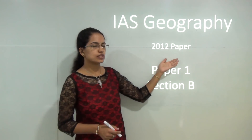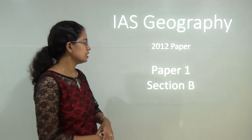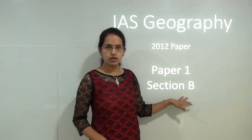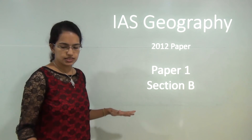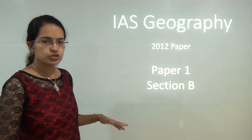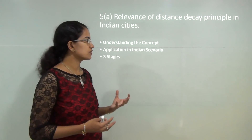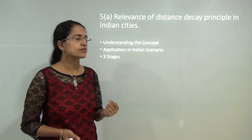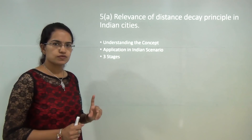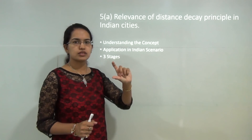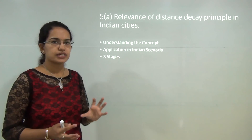In this session we will discuss the 2012 paper for the IAS Geography Optional. We will be covering Section B of Paper 1, having already covered Section A. As we saw in Section A, most questions were direct — the language was just tilted to confuse. Similarly, in Section B, most questions ask about direct concepts or theories with slightly tricky language.